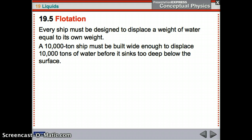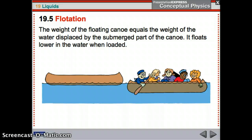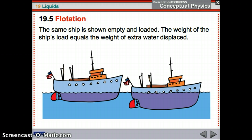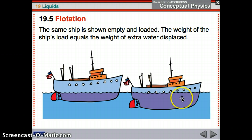For a ship to float, it needs to displace an amount of water equal to its own weight. A 10,000-ton ship needs to displace 10,000 tons of water before it sinks too deep below the surface and takes on water. You can't build a super skinny ship that weighs 10,000 tons because it won't displace enough water — that's why big ships are really wide. The weight of a floating canoe equals the weight of the water displaced by the submerged part. It floats lower in the water when loaded. The extra water displaced weighs the same as the cargo and people on board.